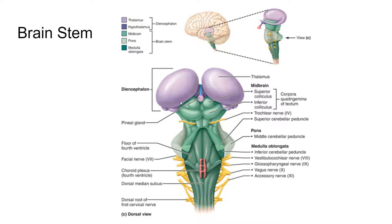The pons is the origin of all cranial nerves. The cranial nerves are nerves that come out of your head and go into the rest of the body and into the spinal cord. These help to maintain normal rhythms like breathing, which is important for the pons.